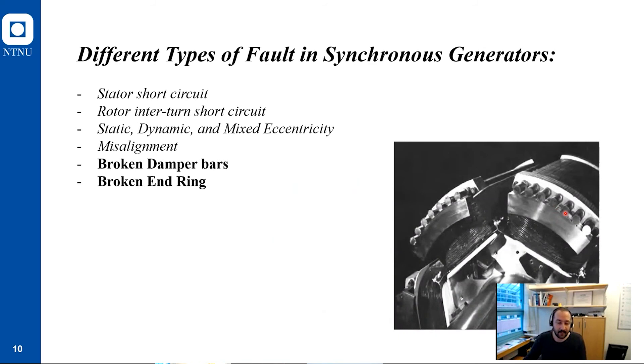In the rotor, in addition to a shaft, the core and the rotor field winding, we also have an end ring and damper bar. In some cases we might have a broken damper bar or broken end ring fault in a salient pole synchronous generator.